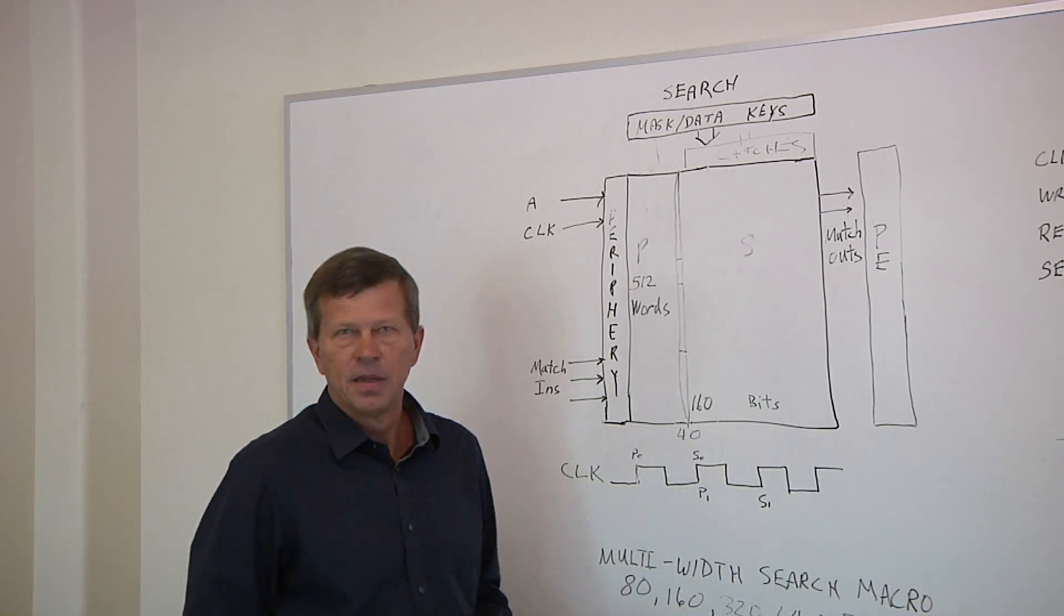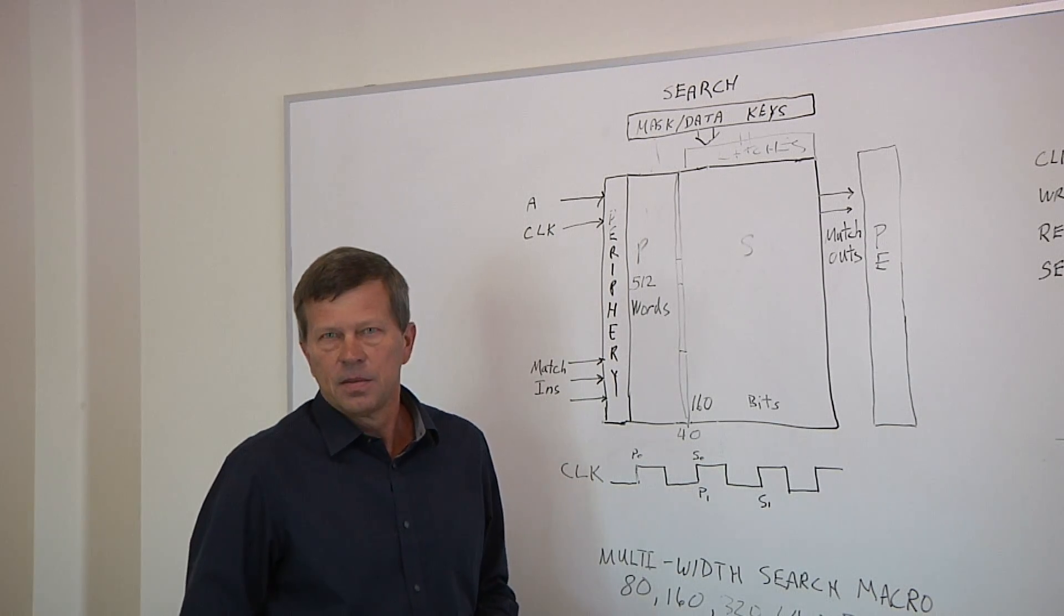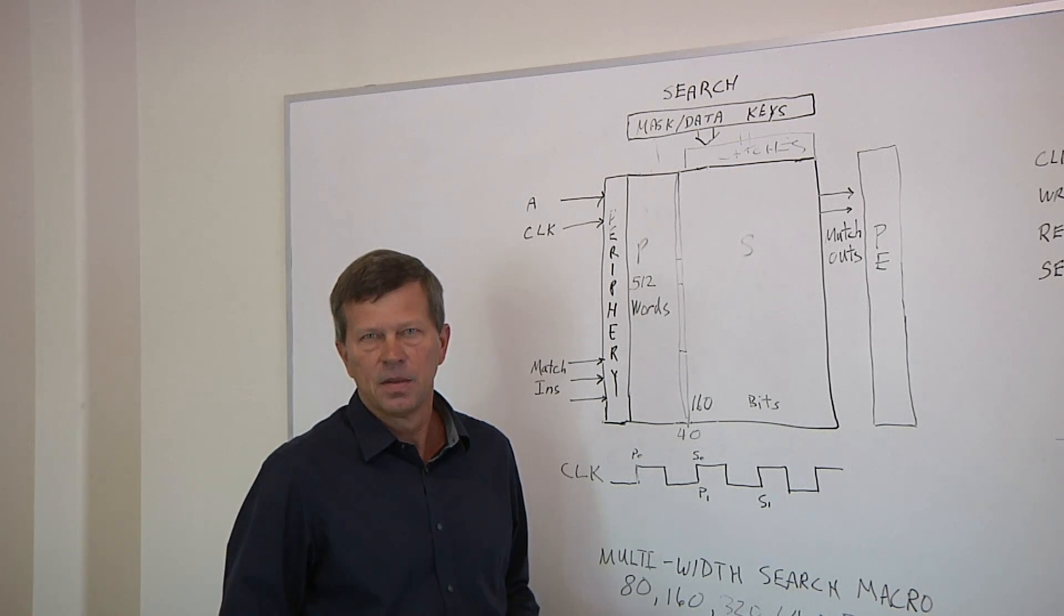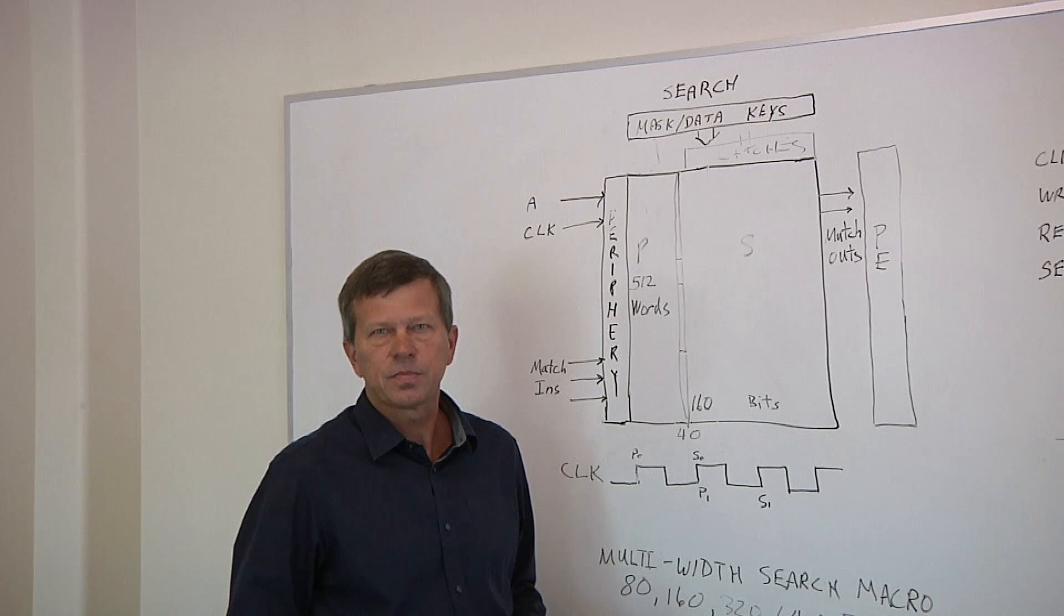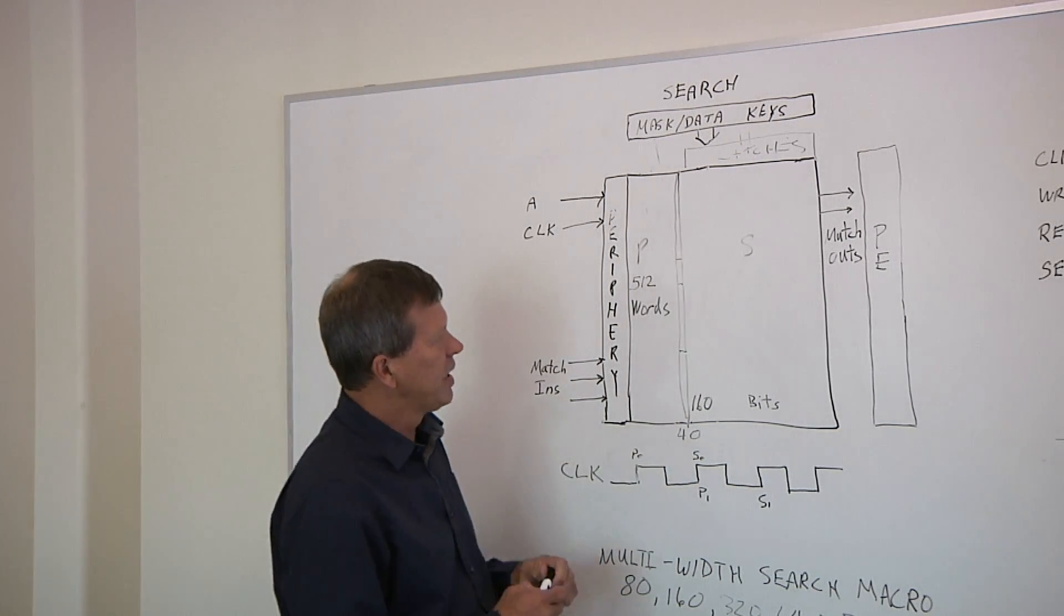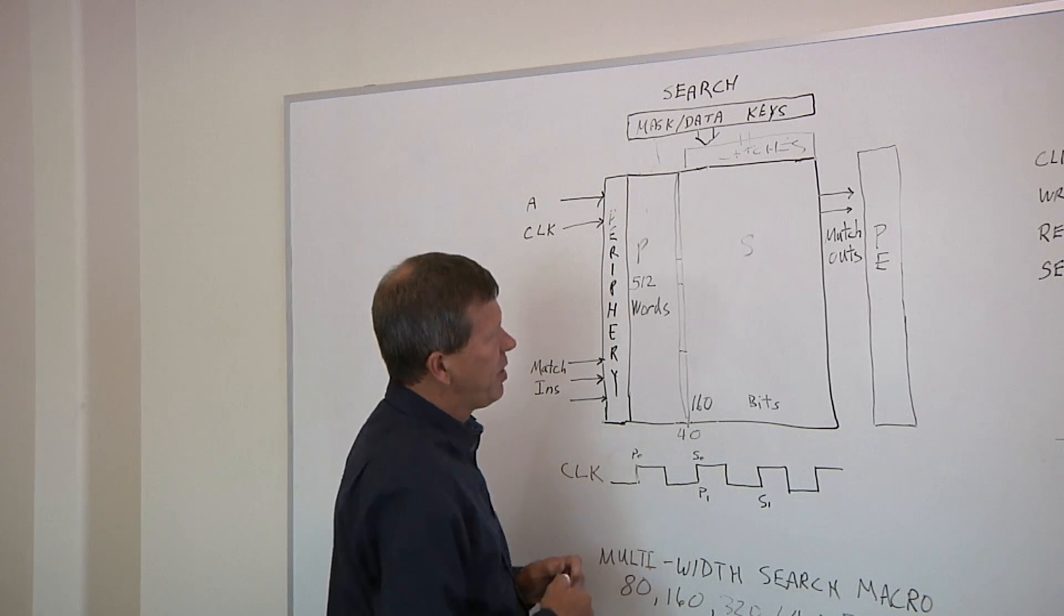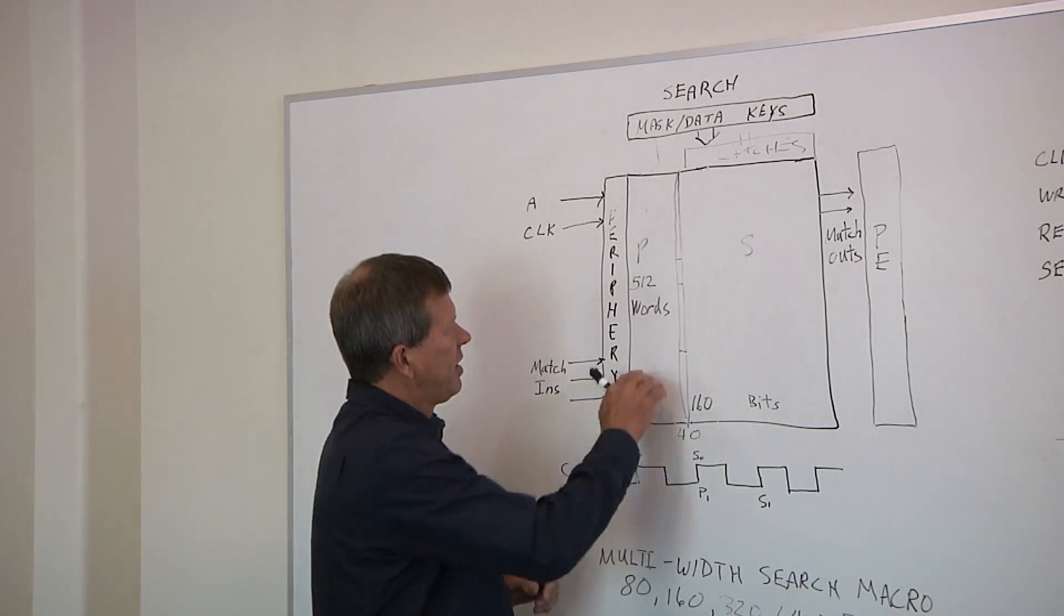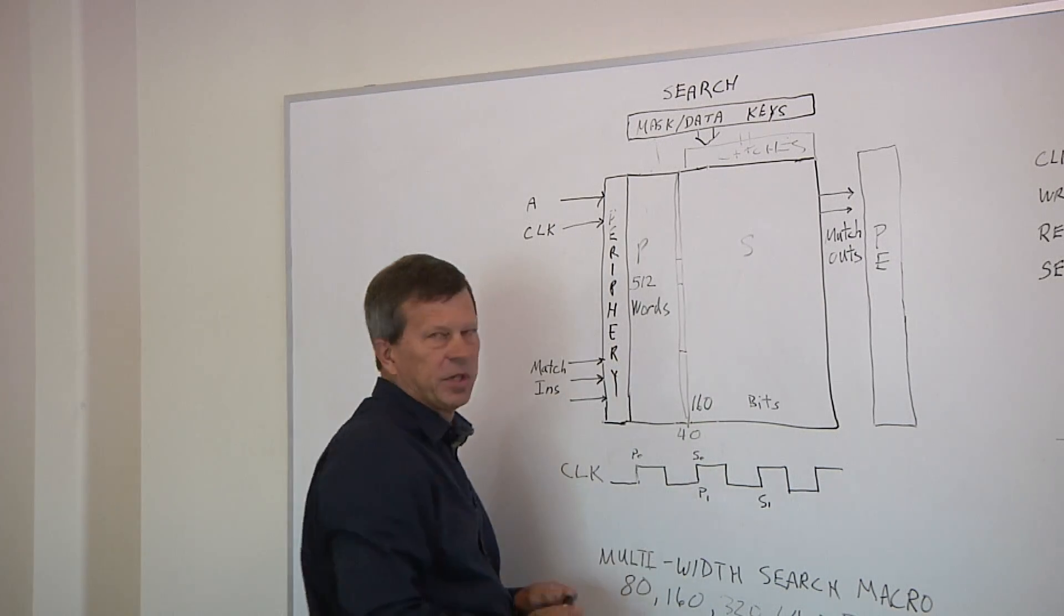So one of the things that we've seen happening in a lot of architectures these days is people are trying to improve efficiency of what's already there. This is a way of really moving that forward, right? That is correct. This will result in a significant power reduction. And in this particular example here, you can realize up to 40 to 45 percent savings in power, depending on the number of matching entries in the first partition.